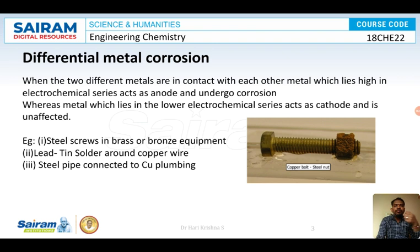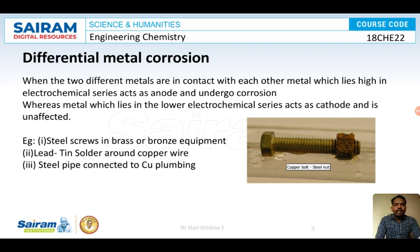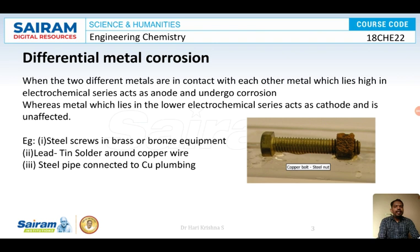Similarly for door handles and fixings — in the old days, an iron rod and an iron cup-shaped holder were both made of iron so no corrosion occurred. But if one is iron and the other is copper, the iron undergoes corrosion. You can observe differential metal corrosion when steel screws are used in brass or bronze equipment. In a copper bolt with a steel nut, the steel nut corrodes. Likewise, a steel pipe connected to a copper plumbing system — the steel pipe acts as anode and corrodes, causing leakage.